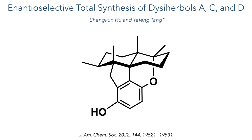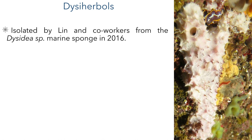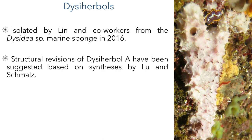This work was published in JACS by Shengkang Hu and Yifeng Tang. The Dissiherbals were first isolated by Lin and co-workers from the Dissidia marine sponge in 2016. Due to their interesting structures and promising biological activities, these compounds have attracted the attention of the synthesis community, and total syntheses have been published by the groups of Lu and Schmals. Based on these synthetic investigations, the original proposed structures were found to be incorrect and have since been revised.